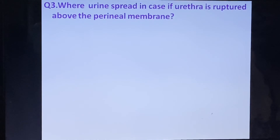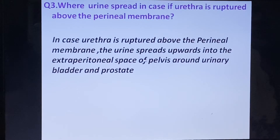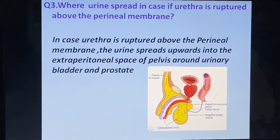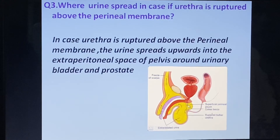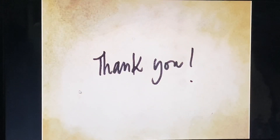If the urethra is ruptured above the perineal membrane, the urine spreads upward into the extraperitoneal space of the pelvis around the urinary bladder and prostate. If the rupture occurs above the perineal membrane, the urine enters this extraperitoneal pelvic space rather than the superficial perineal pouch.